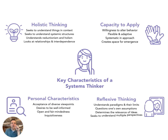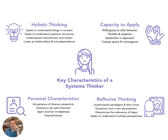So these are the four main ones: holistic thinking, capacity to apply, reflexive thinking, and personal characteristics. This is all about moving from the ideas to actually the characteristics, the attributes, the behavior of a systems thinker and what it looks like in practice to actually be applying this.